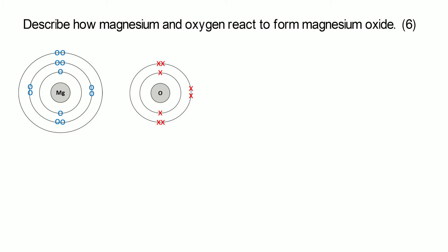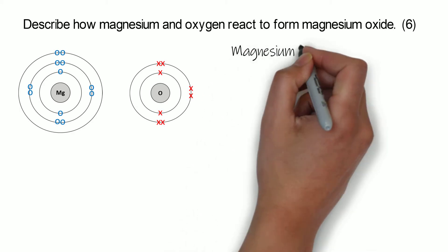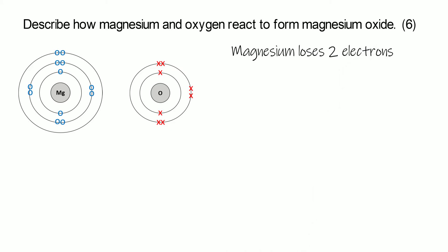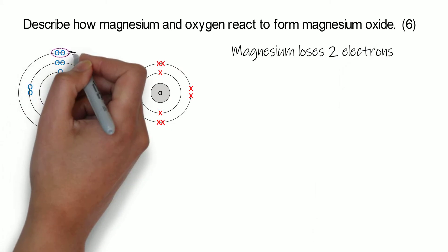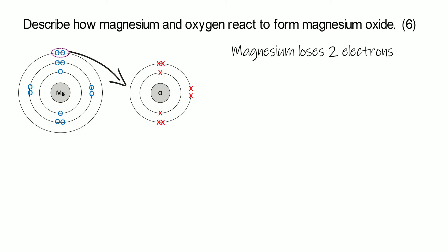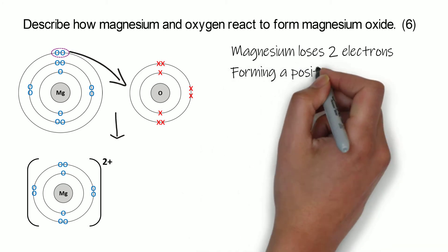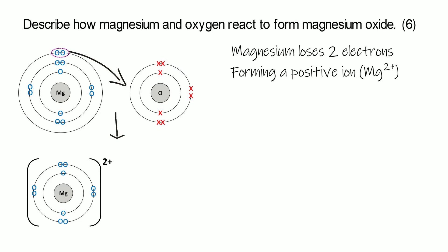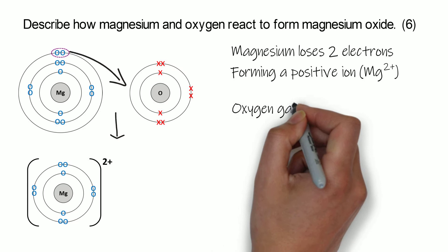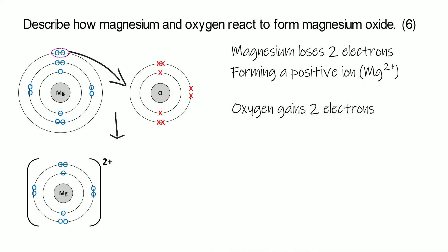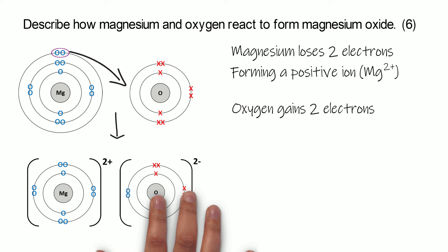Those electrons from magnesium are going to be transferred to the oxygen atom. Your first marking point will be that magnesium loses two electrons — you need to state that it's two. Because magnesium lost two electrons, we form a Mg²⁺ ion instead of just a one plus ion. The oxygen atom will form a negative ion, but because it's gaining two electrons instead of one, it's going to form an O²⁻ ion.